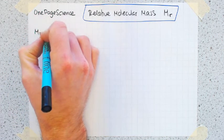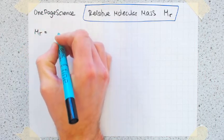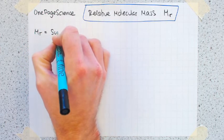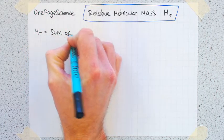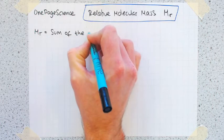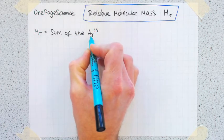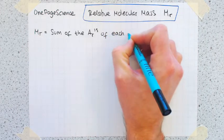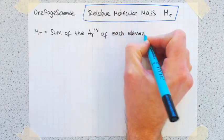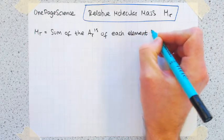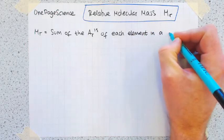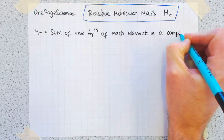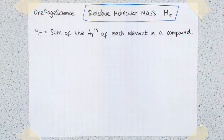Relative molecular mass, MR, equals the sum of the ARs, so the relative atomic masses, of each element in a compound. That's what it means in words.